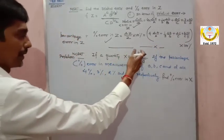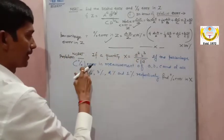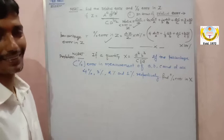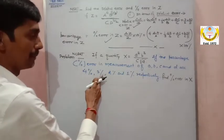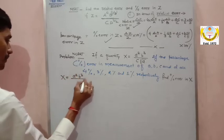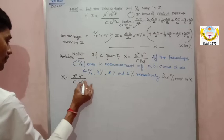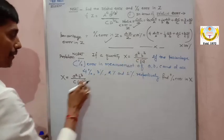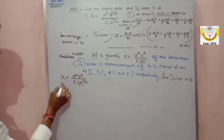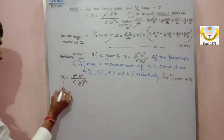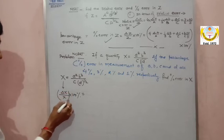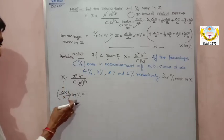Next question: X = A²B³ / (C√D). Rewrite √D as D^(1/2). Percentage error in X: delta X/X × 100% = 2 × (delta A/A × 100%) + 3 × (delta B/B × 100%) + (delta C/C × 100%) + (1/2) × (delta D/D × 100%). This is: percentage error in X = 2 × (% error in A) + 3 × (% error in B) + (% error in C) + (1/2) × (% error in D).